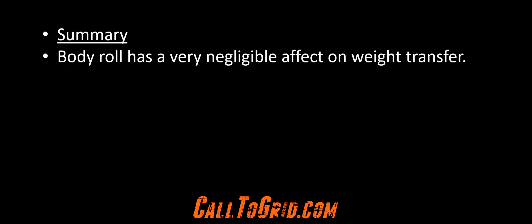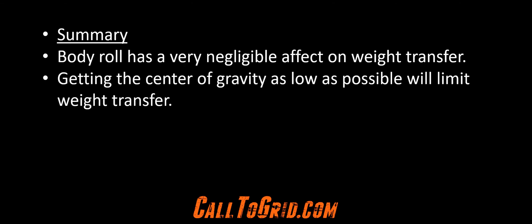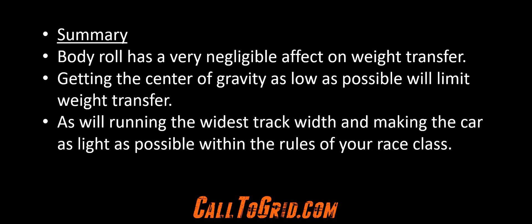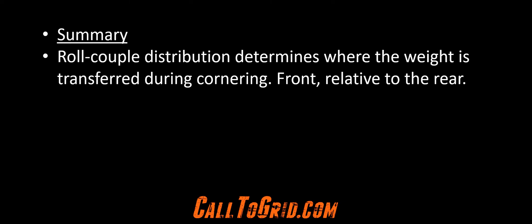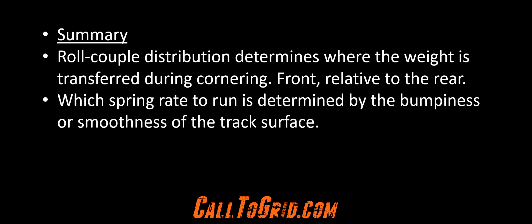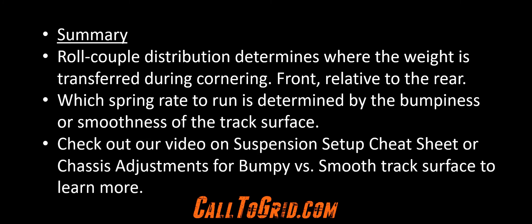In summary, body roll has a very negligible effect on weight transfer. Getting the center of gravity as low as possible will limit weight transfer, as will running the widest track width and making the car as light as possible within the rules of your race class. Roll couple distribution determines where the weight is transferred during cornering, front relative to the rear. Which spring rate to run is determined by the bumpiness or smoothness of the track surface. Check out our video on suspension setup cheat sheet or chassis adjustments for bumpy vs. smooth track to learn more about spring rates.